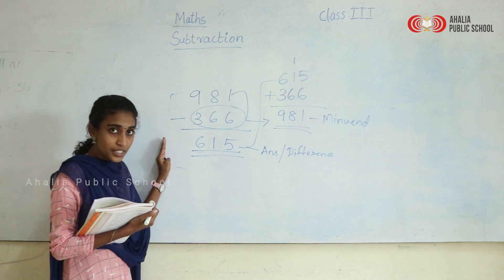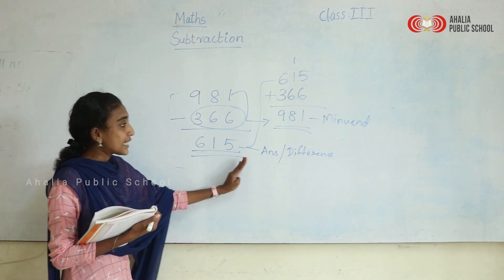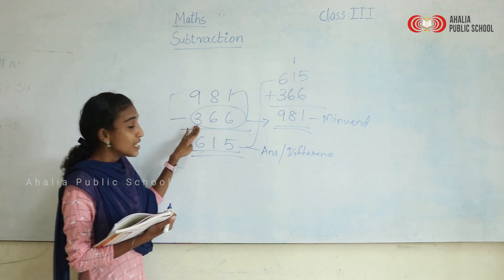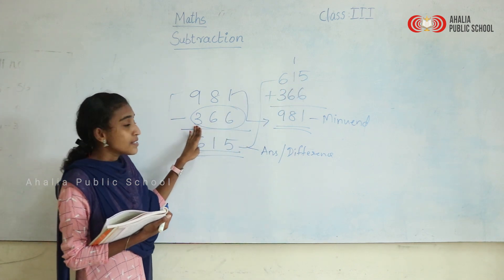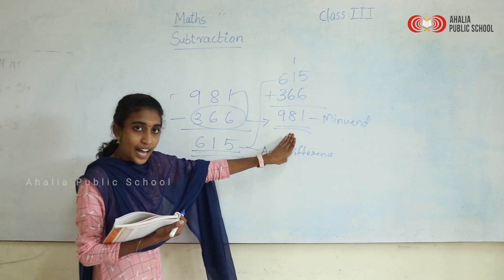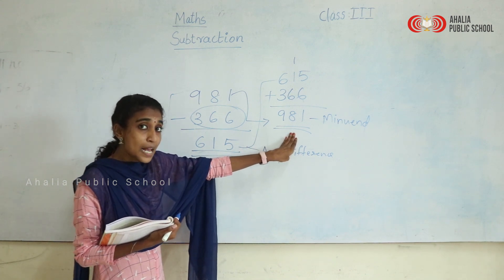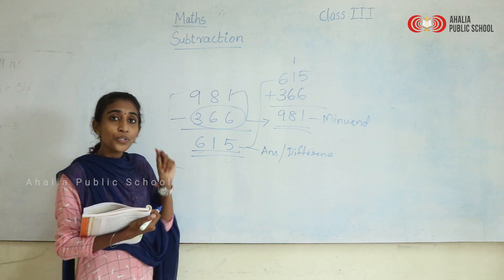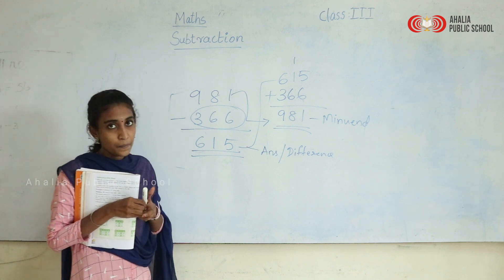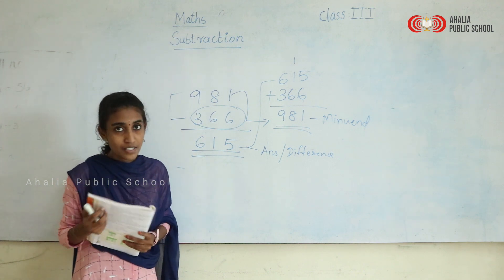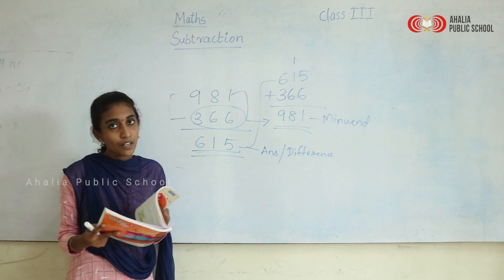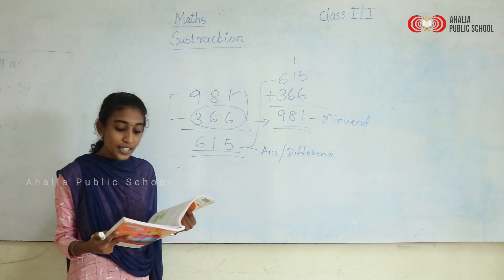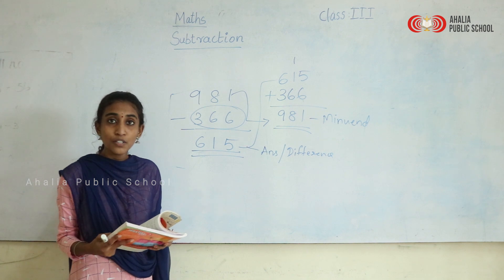This is how you check your answers using addition. First do the subtraction and take the difference. Then add the difference to the subtrahend and you will get the same answer as the minuend. So far we have discussed subtraction with and without regrouping, addition and subtraction together, and checking subtraction through addition.